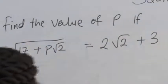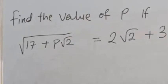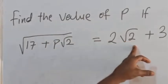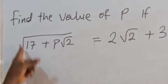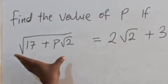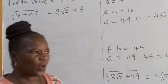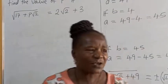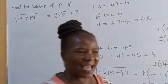Now look at this other problem. You are asked to find the value of P if √(17 + P√2) = 2√2 + 3. It would be wrong to say that because you see P√2 and 2√2, then P = 2. No, that is wrong. P is inside the square root. We have the square root of the whole expression equal to 2√2 + 3. In order to find P, we need to remove the square root — we must break the shell. We square both sides.